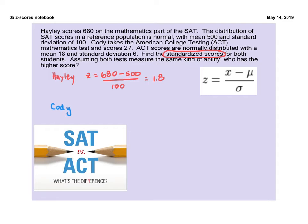So for Cody, he scores 27. The average is 18. And the standard deviation is 6. So if we calculate that, we get 1.5. So also doing well, but not quite as far from the mean as Haley.